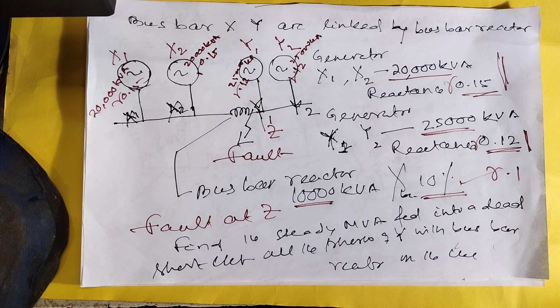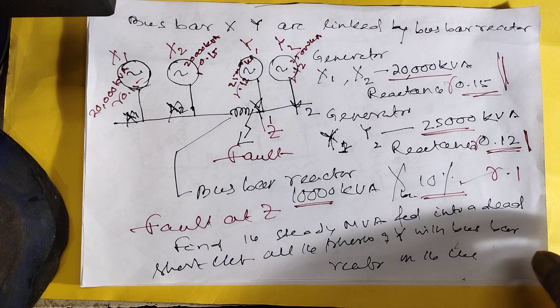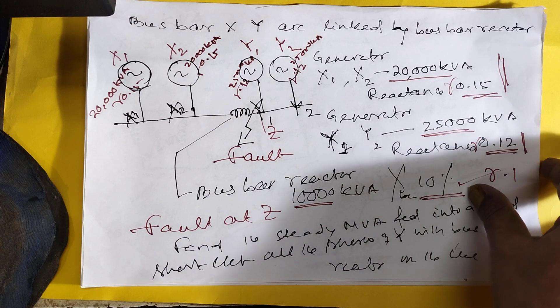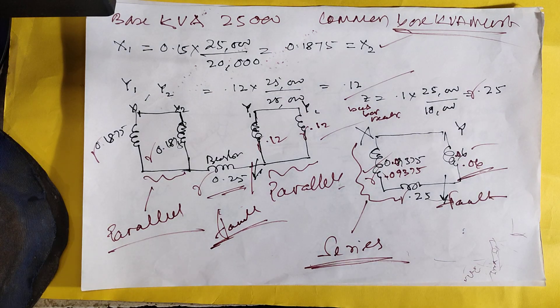So first, one thing you have to do in this strategy: make common KVA. So that will be known. Make all the connections to common KVA. Here, choose the base KVA as 25,000 KVA.